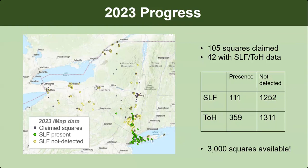This map shows data put into iMap this year. Tom will later show a map of the official distribution — this is just our iMap reports so far. The purple squares are locations where volunteers have claimed grid squares to conduct surveys, the green points are spotted lanternfly detections, and the yellow points are areas where people have gone out, checked, and not found it yet. We already have thousands of records this year, but there are still about 3,000 locations up for grabs, so we'd be really happy to have more volunteers participate.